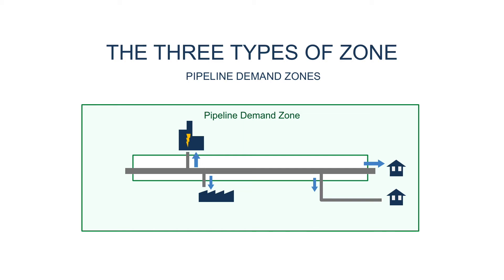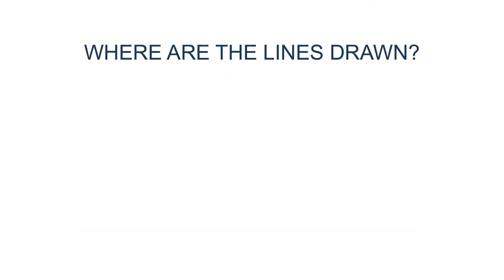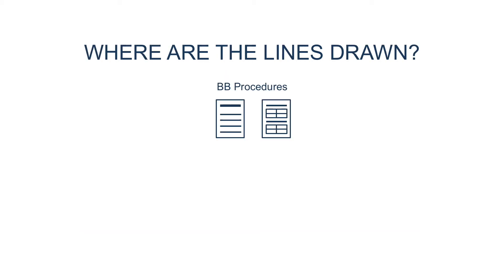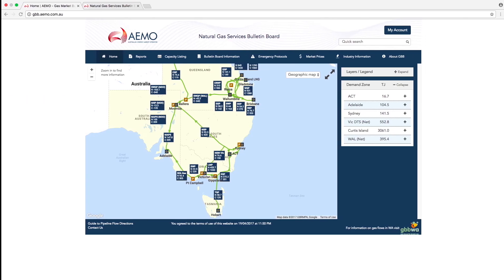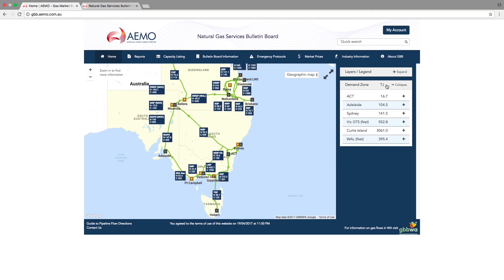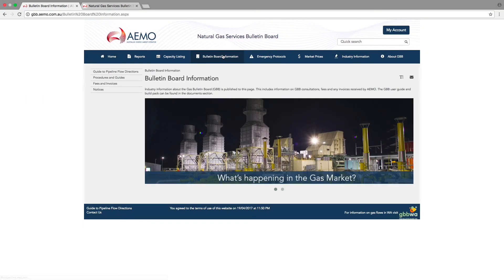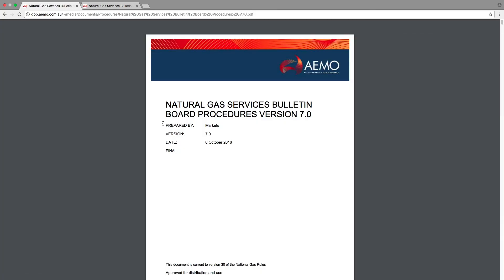But there are exceptions. The bulletin board procedures define the flows that are included in each zone, so when you analyze flow data, the zone definitions can be very handy. They also specifically mention any flows that are excluded, but these are usually connections to other pipelines, rather than sources of demand. You can find the bulletin board procedures under the bulletin board information tab, and under the procedures and guides section.